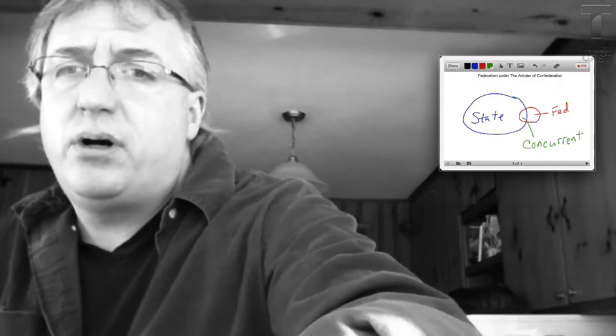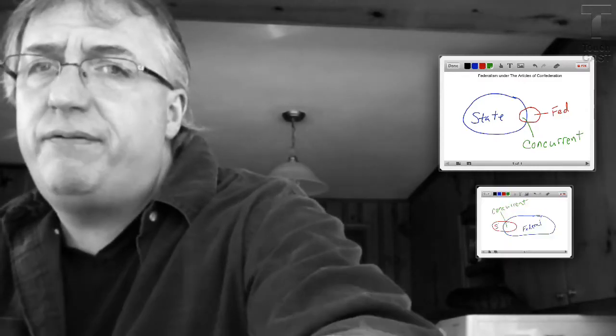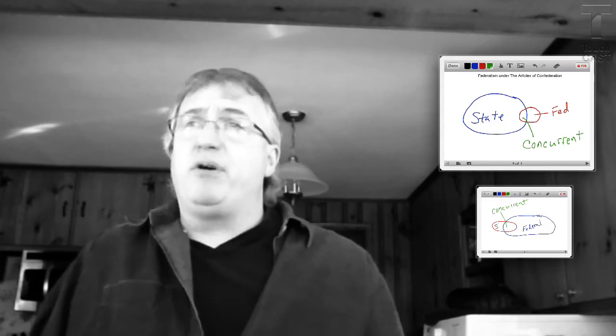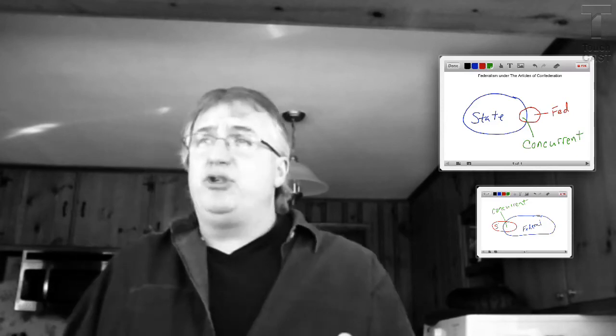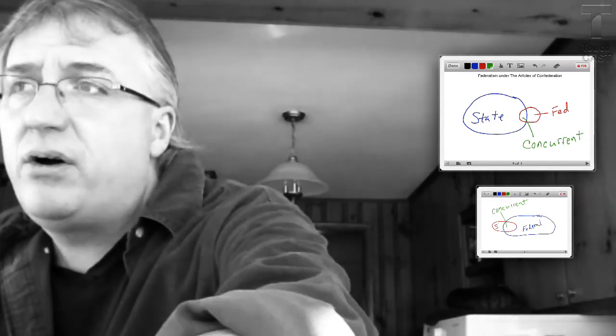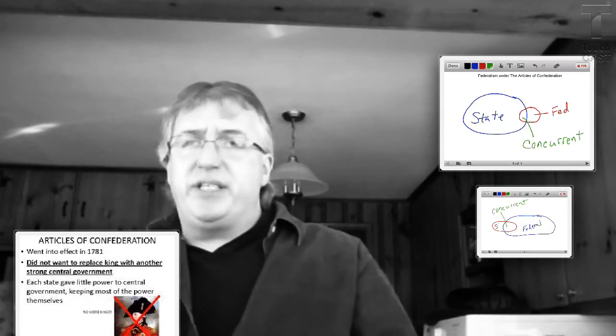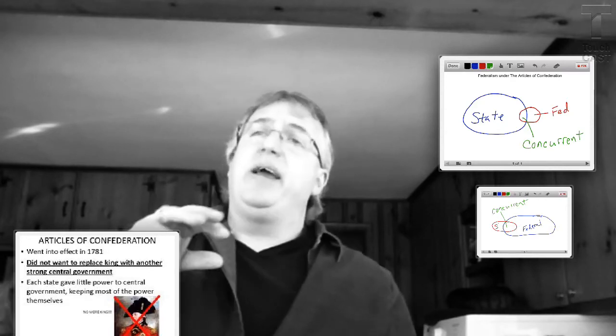Okay, Unit 3. I'm thinking this is Lecture 5. It's a supplemental specifically on the Articles of Confederation and why they fail. The Articles of Confederation is our first national government, our first constitution or plan of government, and it's going to rule a nation from 1776 through 1787.